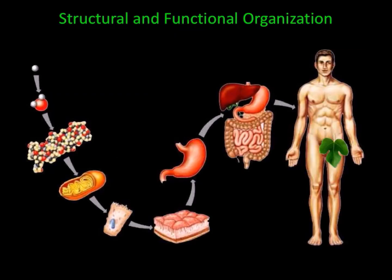When studying the human body, you can appreciate the fact that the human body is a complex organism, and complexity increases as the levels of organization increase. Beginning with the least complex structure of the human body, we see that there are atoms. Atoms come together to form molecules, and since we're talking about a living organism, these molecules will be reorganized into things called macromolecules.